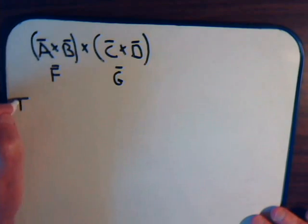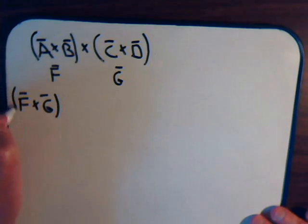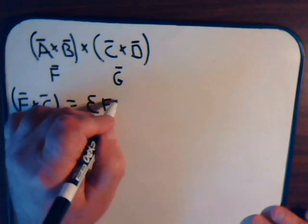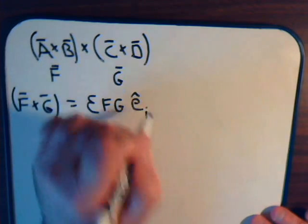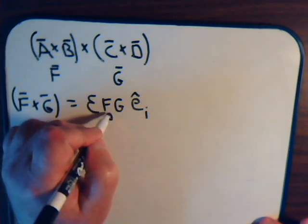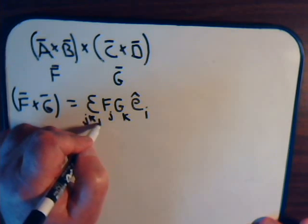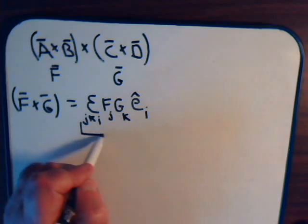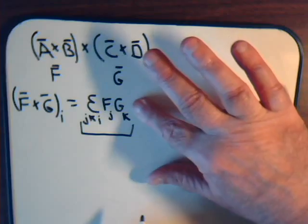So we have f cross g equals epsilon f g times some unit vector, we'll just call it i like we did before. This is j, this is k, so you have epsilon j, k, i. And the i-th component of this, of f cross g, is just that. So the i-th component is this.